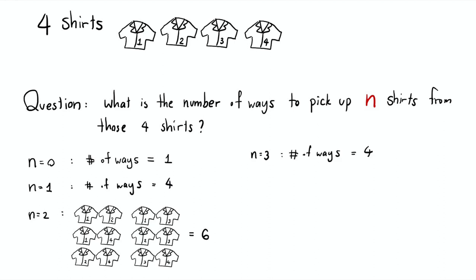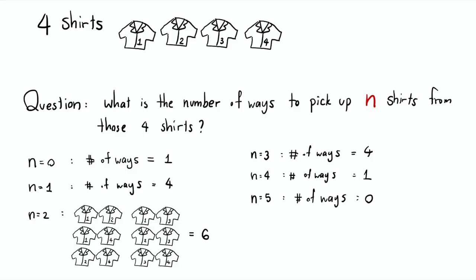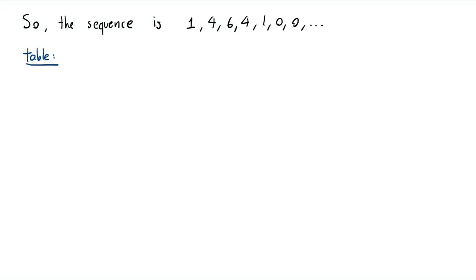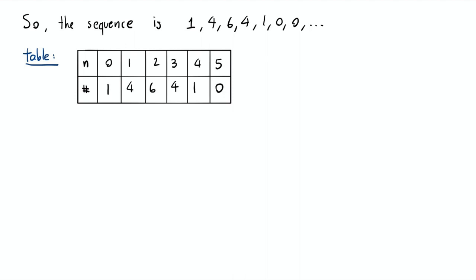If you want to pick 4 shirts, there's only one way because you have to pick all of them. If you want to pick 5 shirts, it's impossible — you cannot pick 5 shirts if you only have 4. So for n equal to 5, the number of ways is 0, same for n equal to 6, 7, and so on. So this is the sequence representing the number of ways to pick n shirts out of 4 shirts. You can write down a table with n and the number of ways below.